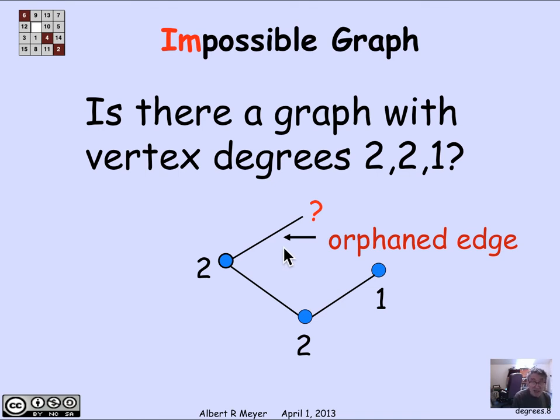And by this ad hoc reasoning, we figured out that there can't be a degree 3 graph with this spectrum of degrees 2, 2, 1. It's impossible.